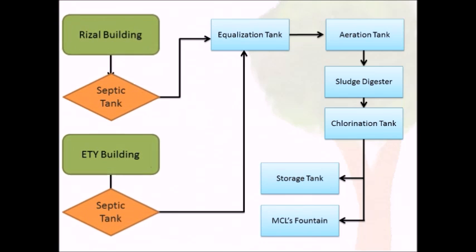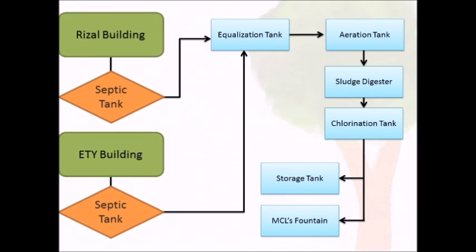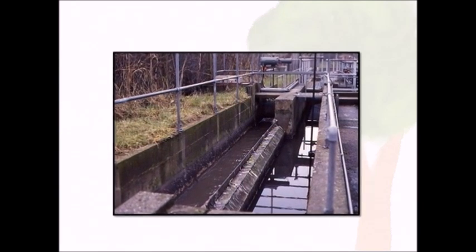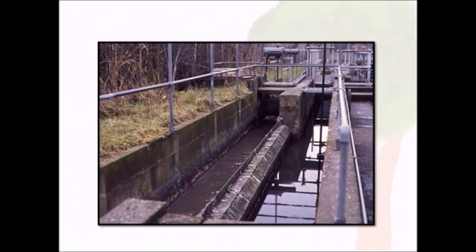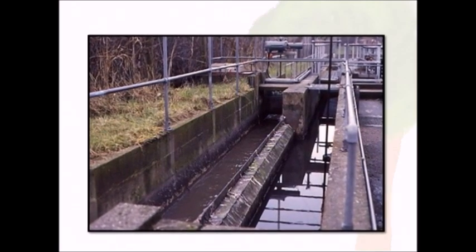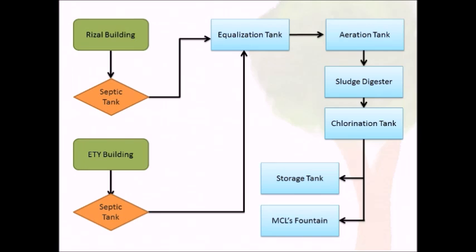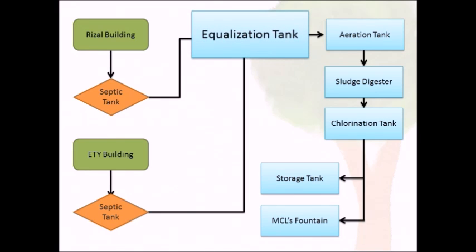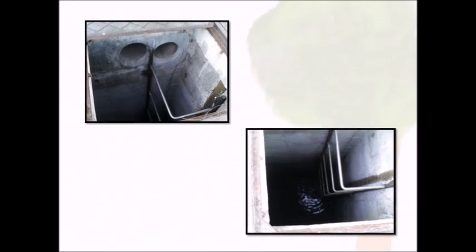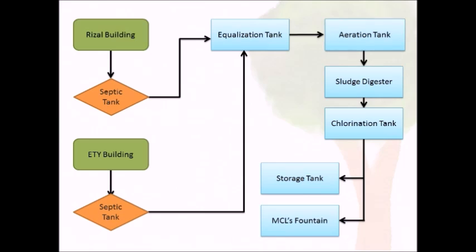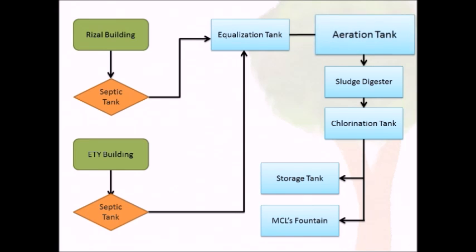The wastewater coming from the septic tank from the JPE Riesel building and ETY building will pass through the inlet channel. The inlet channel holds raw wastewater. The wastewater flows through a grease trap. Next is the equalization tank, which serves to receive all the influent from those two pipelines, and is subjected to pre-aeration and odor removal before transferring the volume to the aeration tank.